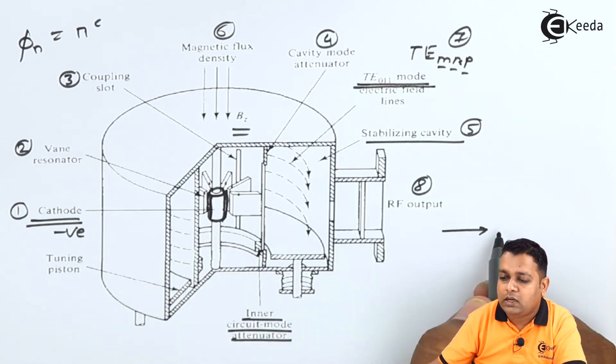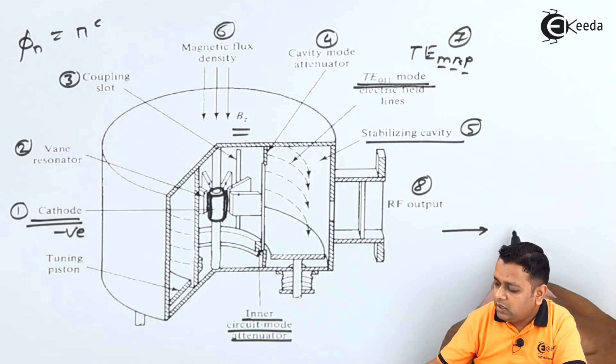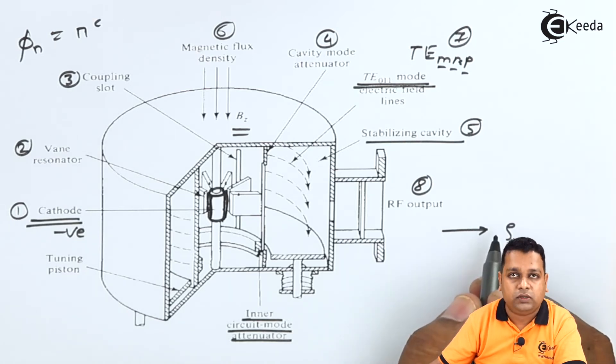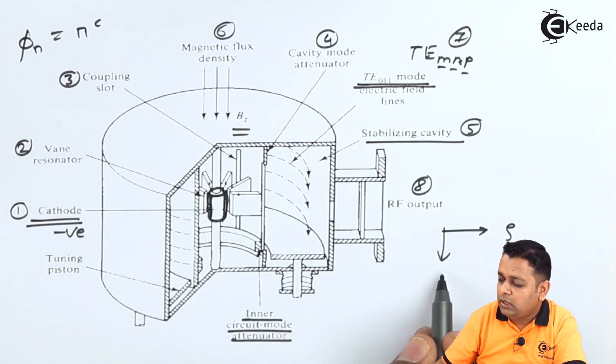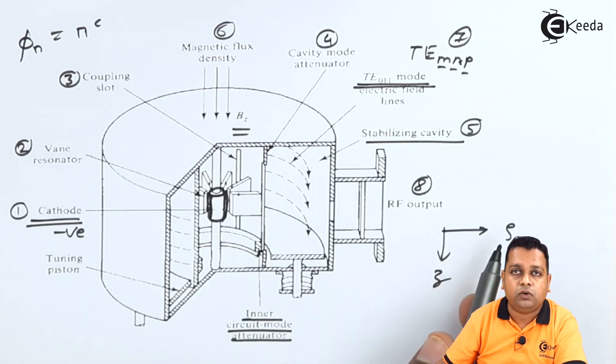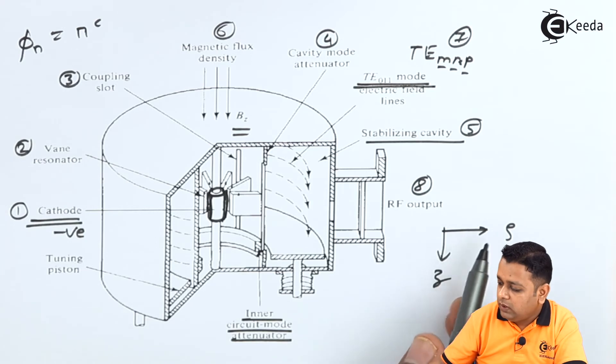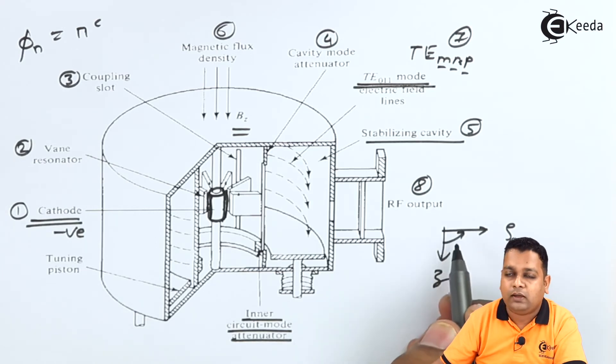So right from the axis which is common to the cathode as well as the anode, here it will be radially outward direction. So the direction can be denoted by rho here. Whereas the magnetic flux density that has been shown downward.